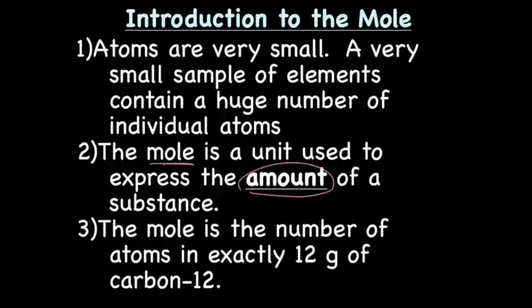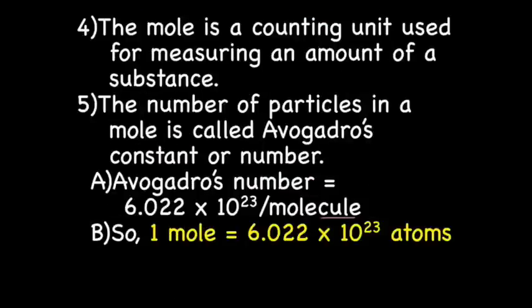Let's go back to this amount unit. Some people get a little confused by an amount unit. It's just like a dozen. A dozen, it's a word, but it means 12. 12 eggs, 12 donuts, 12 students, 12 dogs, whatever. So the mole is an amount unit. The mole is a counting unit used for measuring the amount of a substance. And the number of particles in a mole is called Avogadro's number.